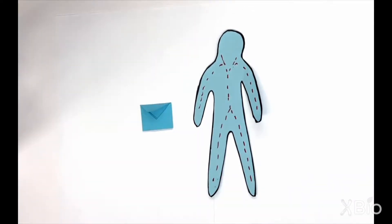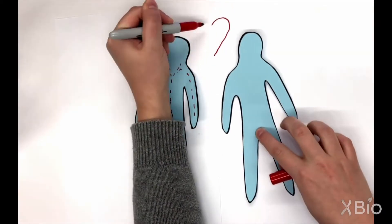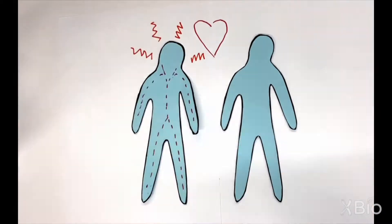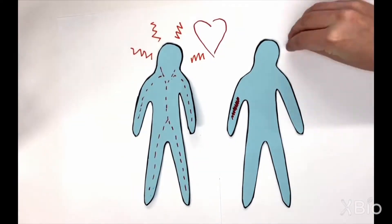Small messengers called hormones help us communicate a message from one part of the body to another. Hormones are involved in many important biological processes, regulating reproduction, stress, inflammation, and metabolism.